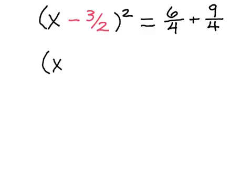This side is staying the same for right now, x minus 3 over 2 squared. And it will be equal to, we now have our common denominator that we want, 4. So we can go ahead and add the two numerators. We have 6 plus 9, which is 15, all over 4.